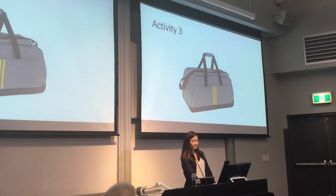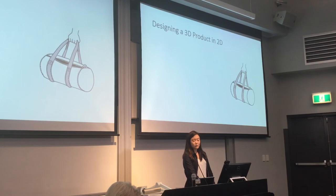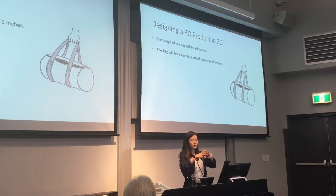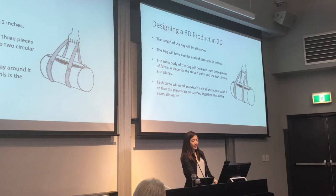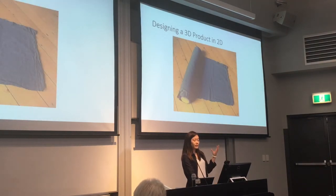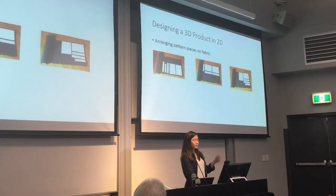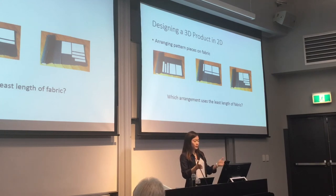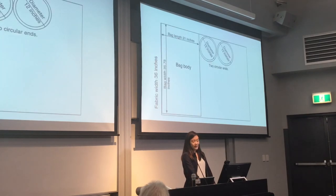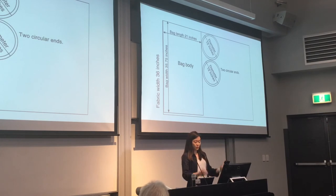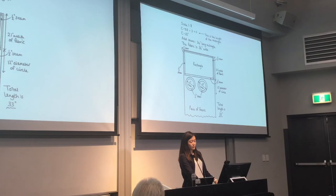Another activity is designing a three-dimensional object in two dimensions. A simple one is: design a new sports bag for the school — a cylindrical shape with circular ends of 11 inches and a bag length of 20 inches. You have to allow for a seam so you can sew the whole thing together. You can also discuss — if this is a roll of fabric, how can we save resources? For example, with five identical rectangles laid out, which way would you arrange them to use the least fabric? They'll probably say option C. Here is the student sample.